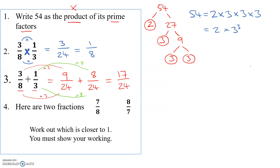Three eighths times one third, and three eighths plus one third look almost identical on the page. You can't go into the exam guessing which one is times tops times bottoms and which one is where we change the denominators. You need to know. Make sure you learn it.